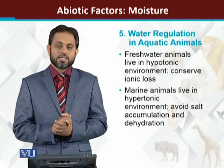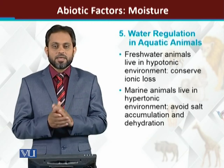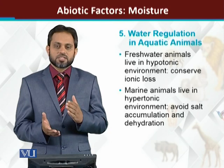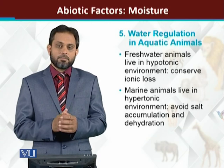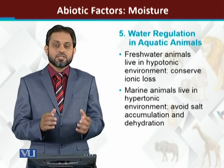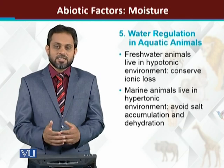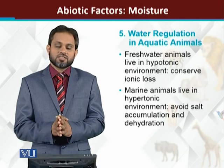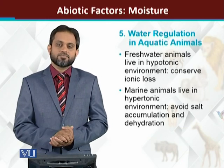So, water regulation in aquatic animals. There are two types of aquatic animals: freshwater animals and marine animals. Freshwater animals don't have a major water loss issue because fresh water is already available, though salts need to be conserved. In the case of marine animals, they live in a hypertonic environment, so they have strategies to save their water — they drink a lot of water and have the ability to secrete excess salts from the body. These are the different methods by which animals maintain their water level.